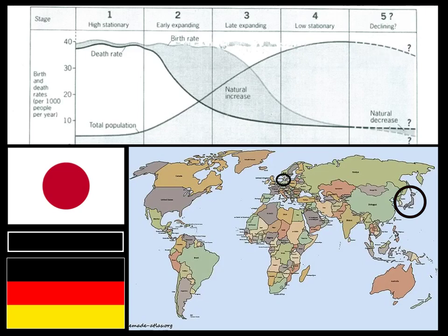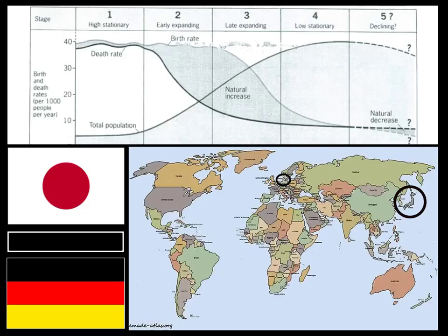Stage five of the demographic transition model is when the population actually starts to decrease. Not many countries have reached stage five — Japan and Germany are the two obvious examples. The death rate outstrips the birth rate because the birth rate remains very low due to lifestyle changes, creating an aging population. Elderly people die eventually, and there aren't enough younger people to replace them in terms of numbers, so the population starts to fall.